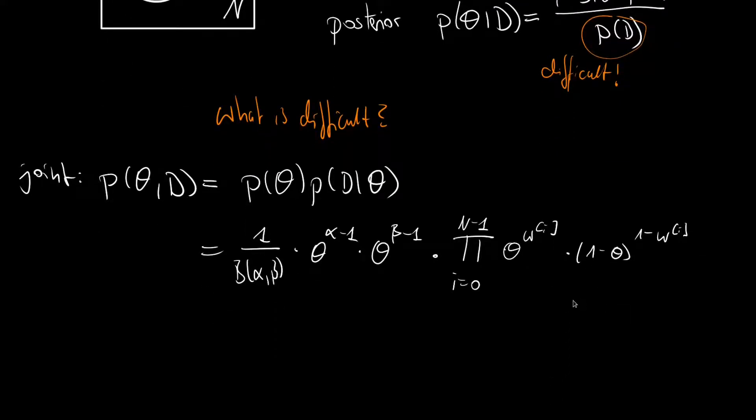Times the product from i=0 to N-1 of theta to the i-th weather observation times 1 minus theta to the 1 minus i-th weather observation. Recall from the posterior video, if we take the product of an exponent, this is equivalent if we take the sum in the exponent.